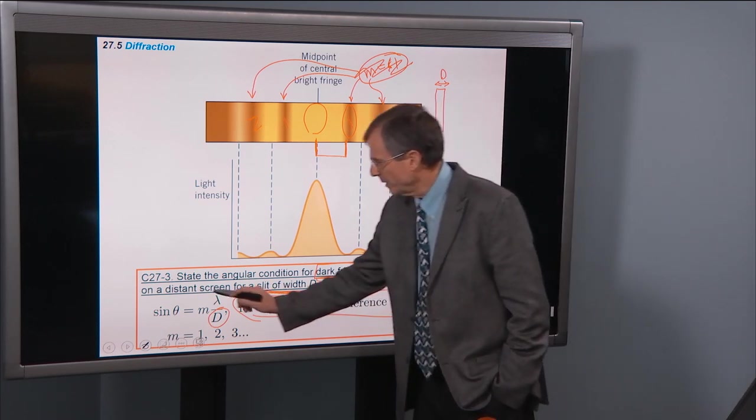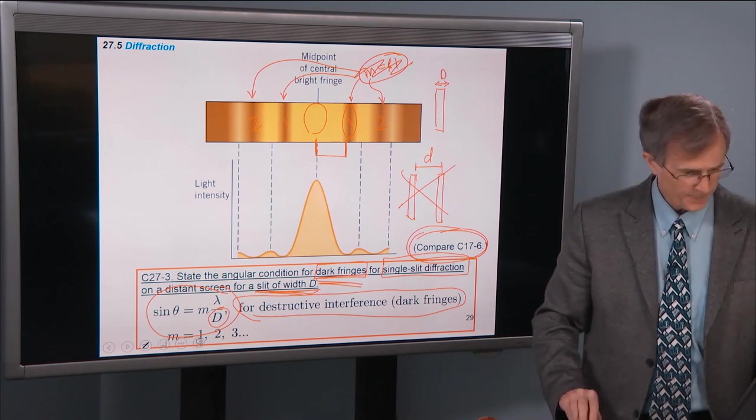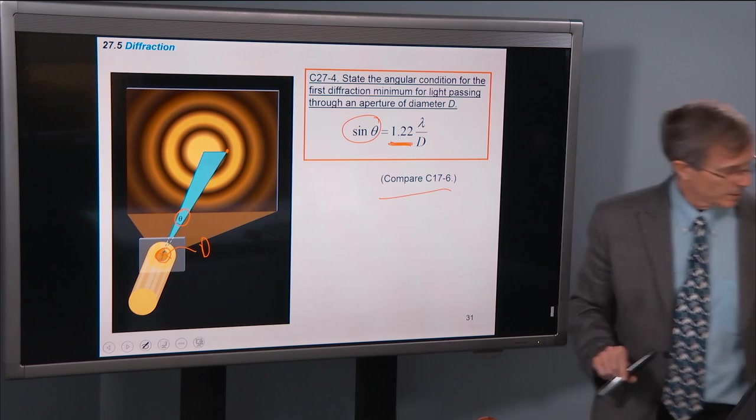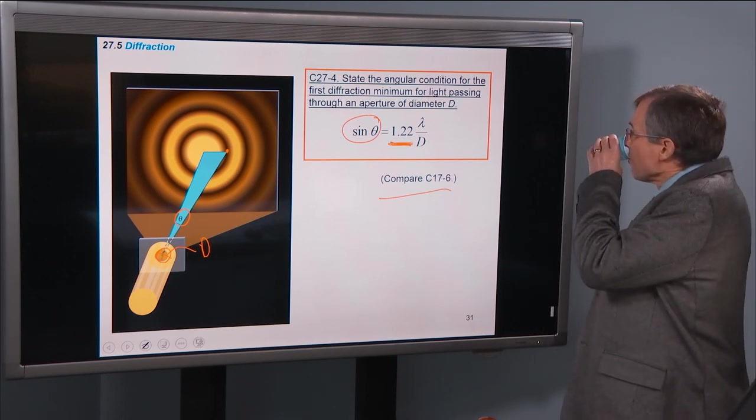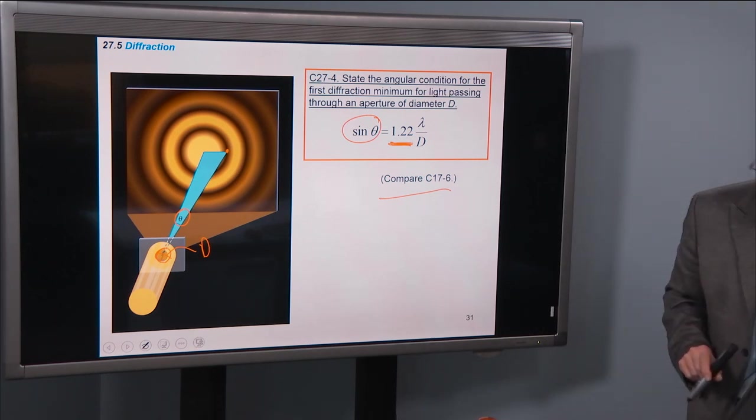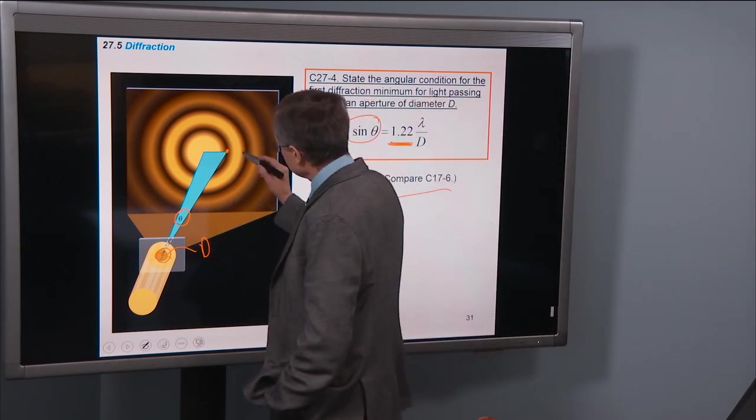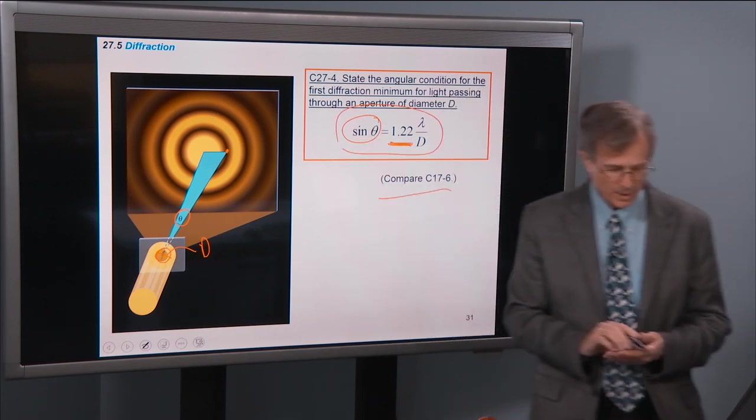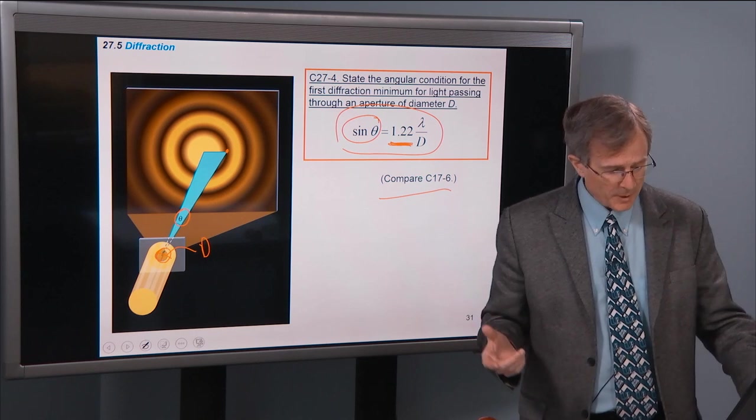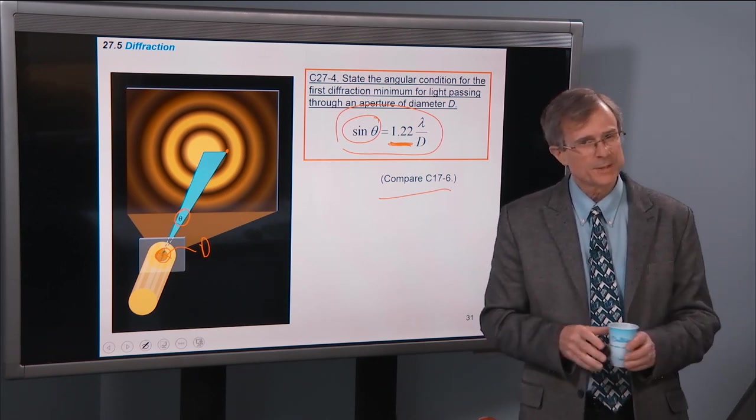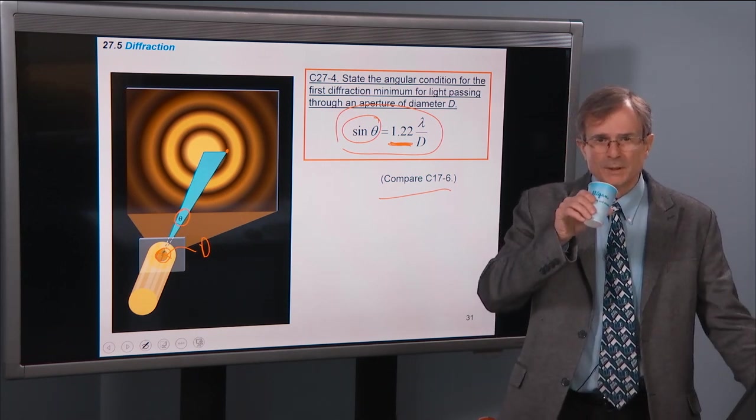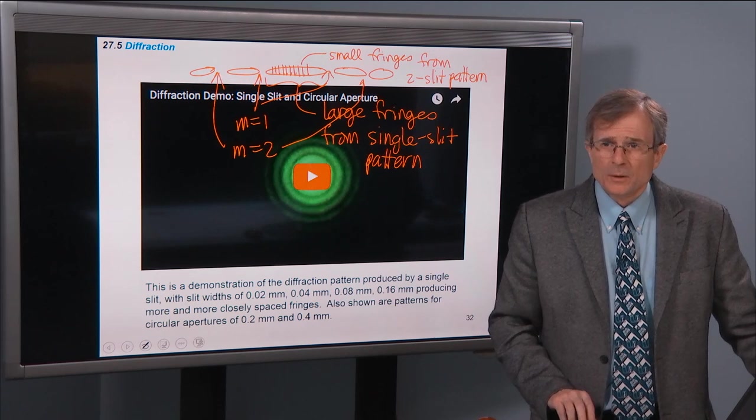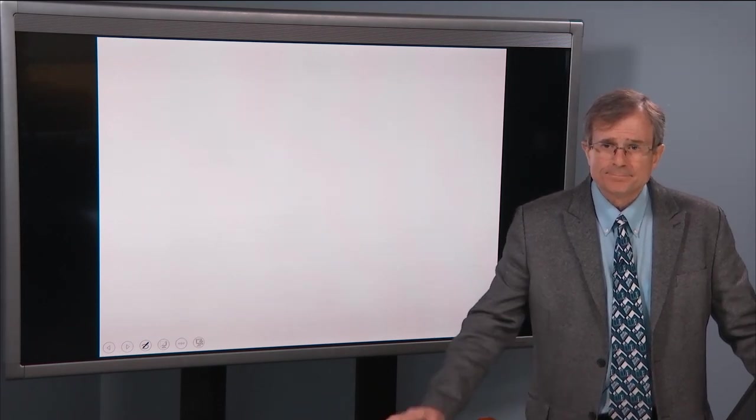So that's this relationship here where we had the bright and the dark fringes that are covered by this concept are given by this equation here. And then also in the demo we saw this pattern with that first minimum located by this equation here, sin theta is 1.22 lambda over d. We weren't able to actually demonstrate that for sound, but it's easily demonstrable for light. Okay. And that's it.